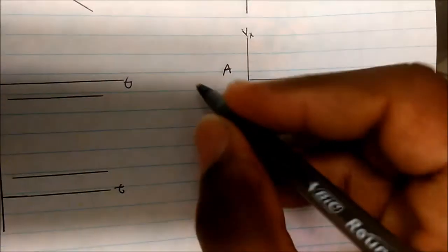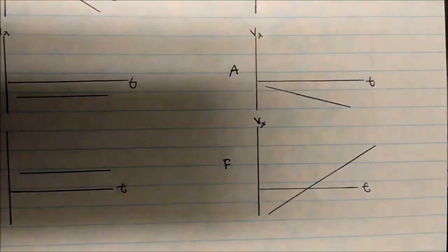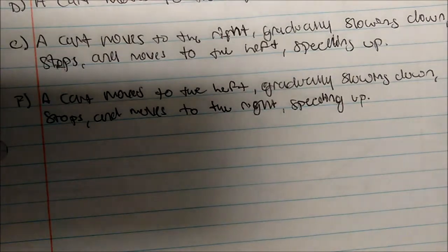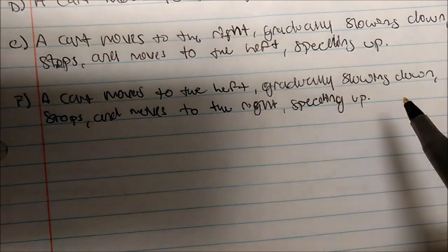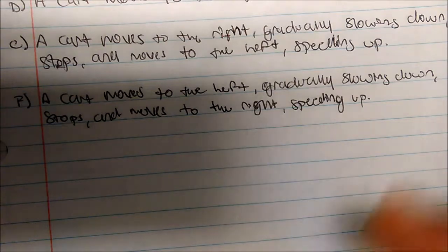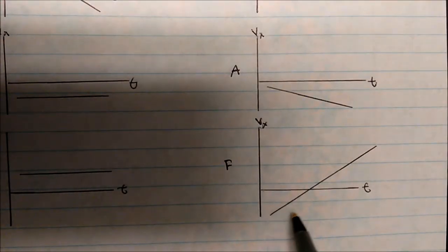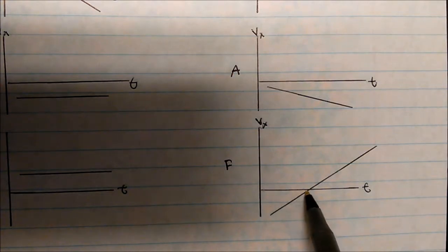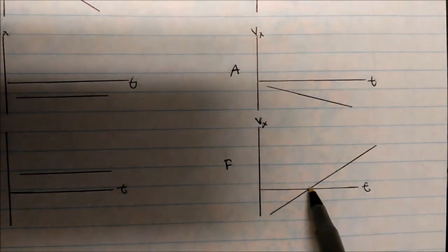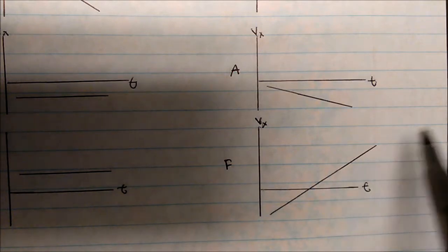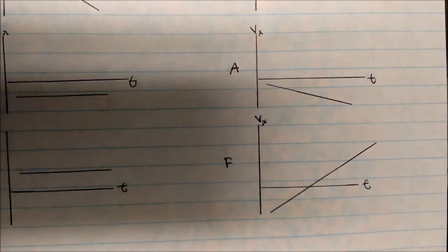By process of elimination, we know this must be F. It says a cart moves to the left, gradually slowing down, stops, and moves to the right gradually speeding up. So initially it's moving to the left, slows down to zero, stops, and then moves to the right speeding up. This is how we read these types of velocity versus time graphs and use them in predicting position.